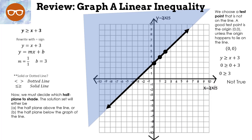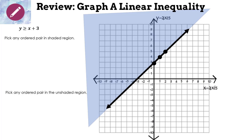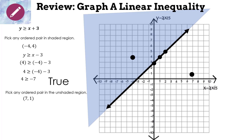Let me prove that every ordered pair in the shaded region is true. I'll pick (-4, 4) from the shaded region: substituting into y ≥ x + 3 gives 4 ≥ -4 + 3 = -7. Is 4 ≥ -7? Yes. Now let's pick (7, 1) from the other region: 1 ≥ 7 + 3 = 4 — is 1 ≥ 4? No, that's not true, and it's not in our shaded region, so that's correct.